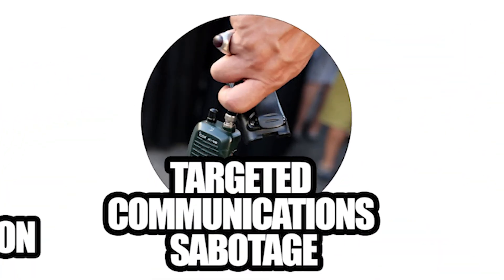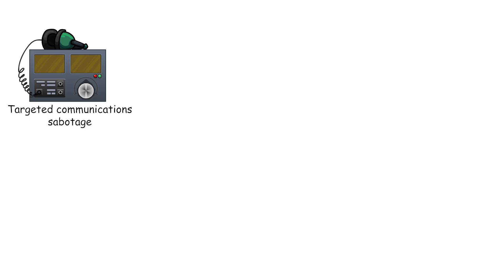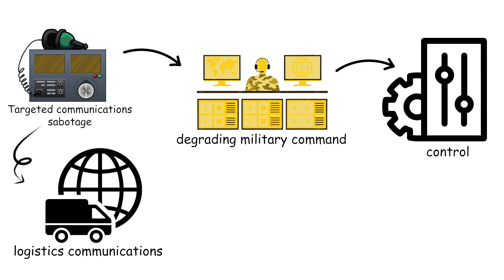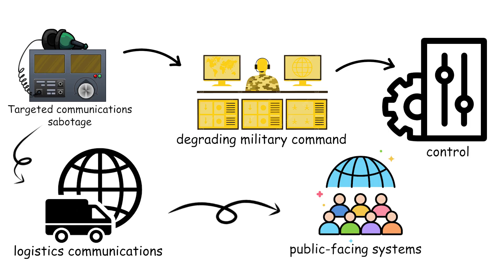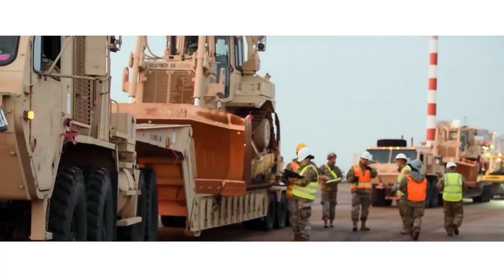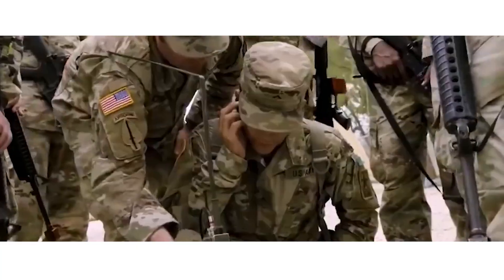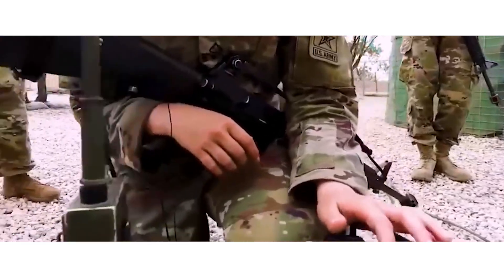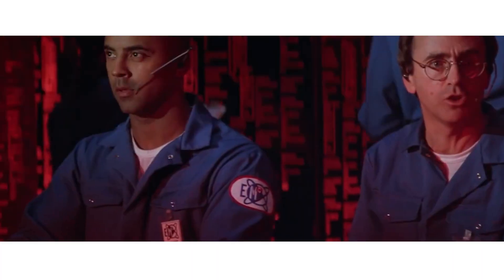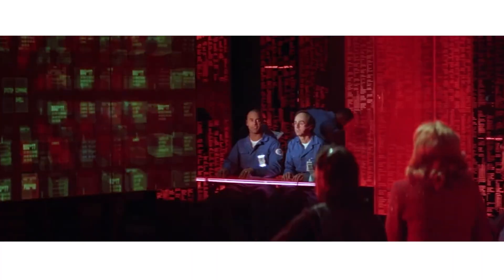Targeted communications sabotage focuses on degrading military command, control, and logistics communications, rather than public-facing systems. These operations aim to blind or slow military units, disrupt supply flows, and introduce friction into battlefield decision loops. Execution requires reconnaissance to identify comms endpoints, routing infrastructure, and intermediary providers.